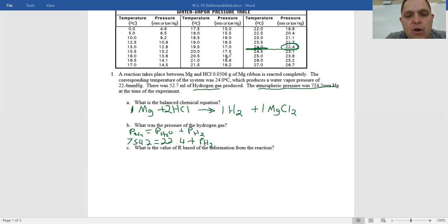So to finally solve for pressure of hydrogen gas, we're going to minus the 22.4 from the 754.2. So let's do that real quick. And I get 731.8. And that is our pressure of hydrogen gas. Now, you can see that we're going to need that on part C.